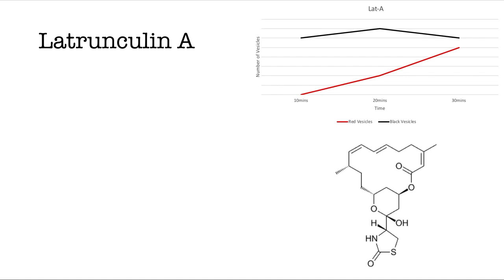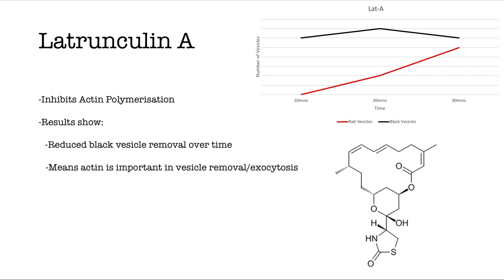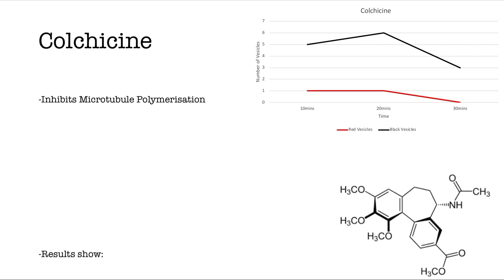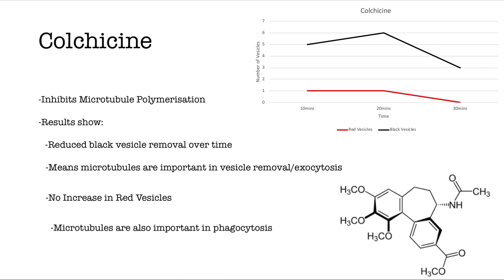We know that Latrunculin A inhibits actin polymerisation. Since there is limited black vesicle removal, we can deduce that actin has a significant role in regular cellular exocytosis. Colchicine inhibits microtubule polymerisation; a slow decrease in black vesicles suggests that microtubules also play a role in exocytosis. Moreover, as there is no increase in red vesicles, microtubules must play an important role in phagocytosis.